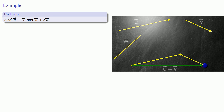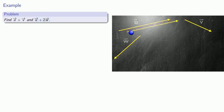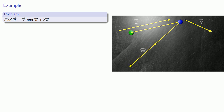How about the vector u plus 2w? We'll start somewhere, then follow u, and then follow the directions that w gives me twice, going 2w. Rather than following u plus w plus w separately, we might see the shortcut path — and that shortcut path is what we call u plus 2w.